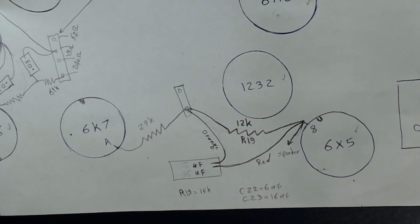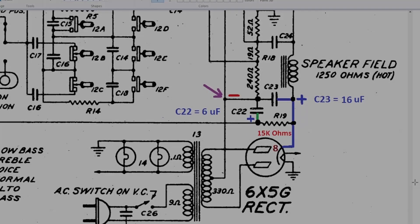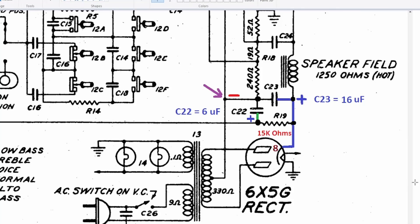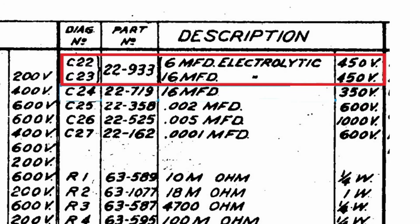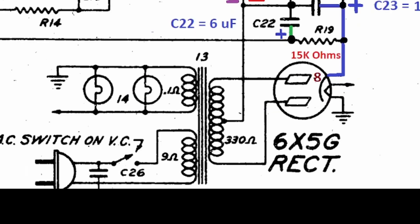I'm going to compare this to the schematic to figure out which one is 16 microfarad and which one is 6 microfarad. As you notice, I transferred all the information to the schematic. At the bottom there's a chart which shows all the parts and values, like C22 is 6 microfarad, C23 is 16 microfarad.